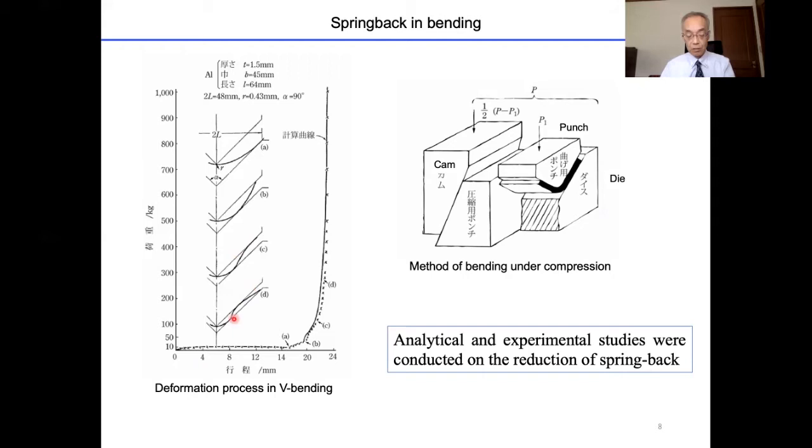In order to analyze this deformation, it is necessary to know the behavior of the pre-deformed material with respect to the reverse deformation by Bauschinger effect. In addition, analytical and experimental studies were conducted on the reduction of springback, and the effects of bending, adding tension and compression was researched. This figure shows the method of bending, adding compression force.